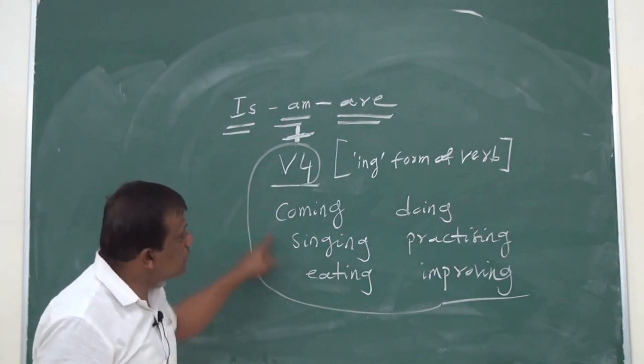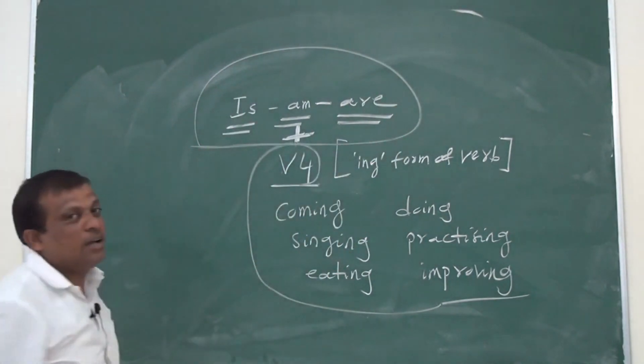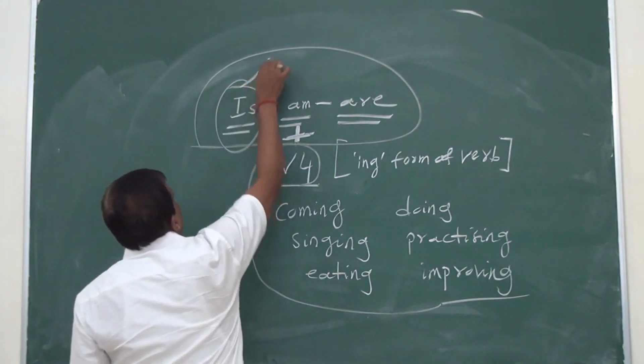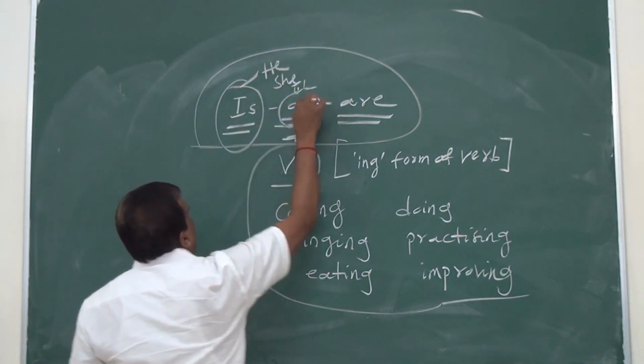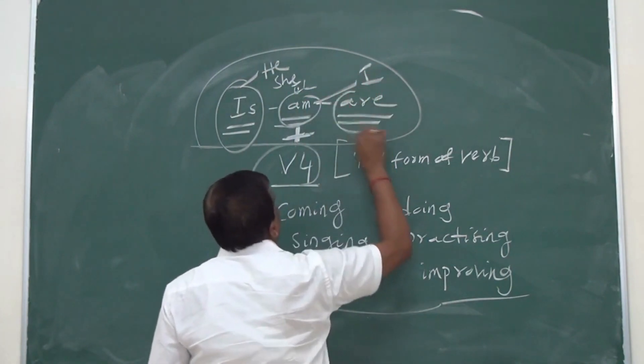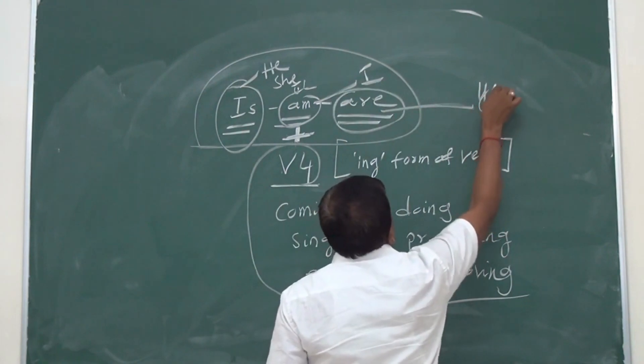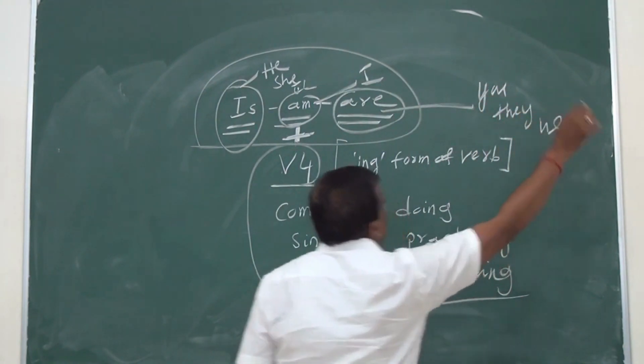How any version of these? If you want to use these, 'is' is for he, she, it. 'Am' is only for I. And 'are' is for you, they, and we.